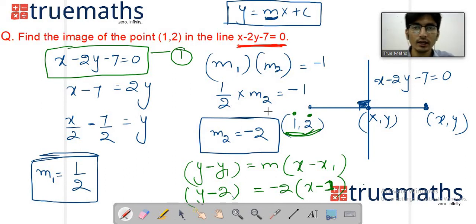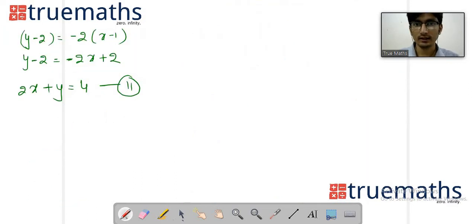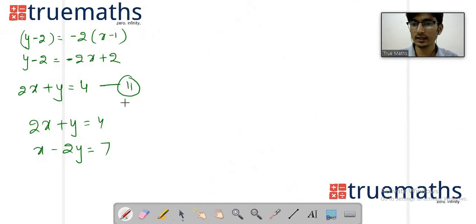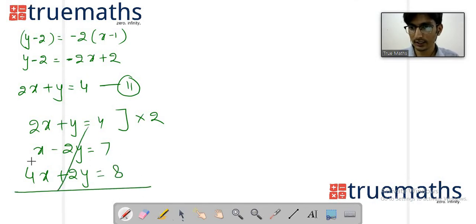Now two line equations - take the common solution. How to solve: 2x + y = 4 and x - 2y = 7. Multiply the first equation by 2, we get 4x + 2y = 8. Add them, cancel, get 5x = 15, therefore x value is 3.